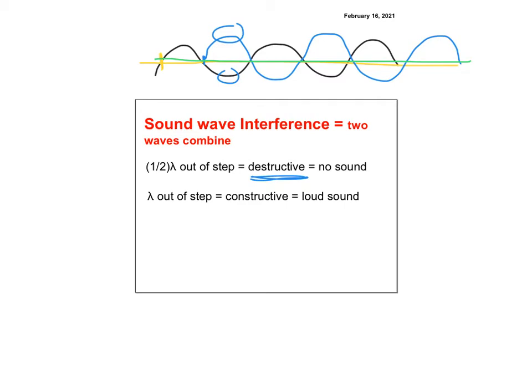The waves have to be exactly the same frequency and exactly half a wavelength out of phase for that to happen. That's how noise-canceling headphones work — they take in the input wave and output a shifted wave, and anything that comes from the outside gets canceled so you don't hear it.